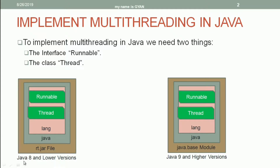If you are working on Java 8 or lower versions of Java, you can find the class Thread or the interface Runnable in the package java.lang. The package java.lang is present in a jar file whose name is rt.jar. So inside rt.jar, you will have the package java.lang, and inside java.lang, you will find the class Thread and the interface Runnable.